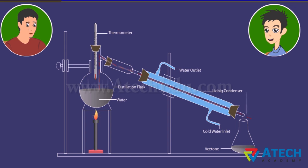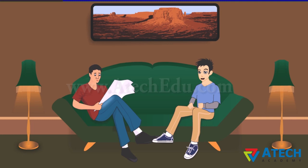Water is left behind in the distillation flask. What if the difference in boiling points between components is small? For this, fractional distillation is used. The apparatus is similar to simple distillation except that a fractionating column is fitted between the distillation flask and the condenser. The beads in the fractionating column provide a surface for vapors to cool and condense. Air is a homogeneous mixture that can be separated into its components by fractional distillation.